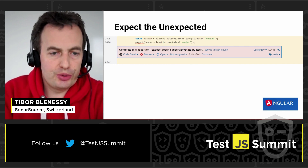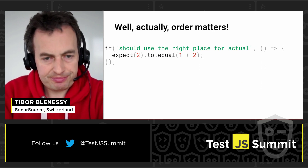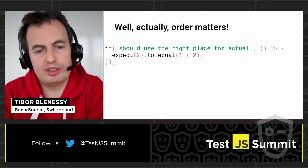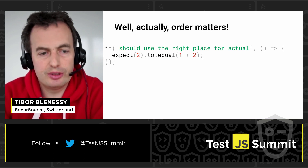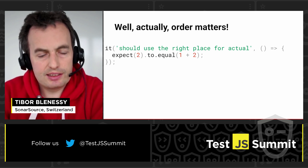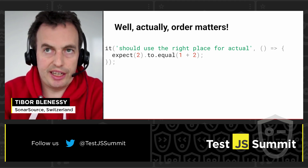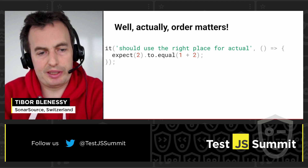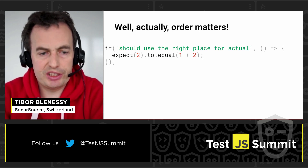The next issue I would like to show you might be a bit cosmetic, however it often helps to have a clear test to better understand the real issue. When you write your assertion, you always need to provide the actual value, which is the result of the test, and your expectation. The order in which these values are provided matters.